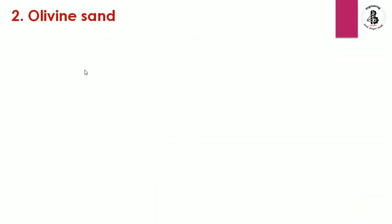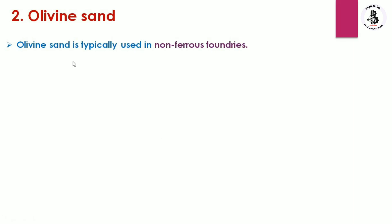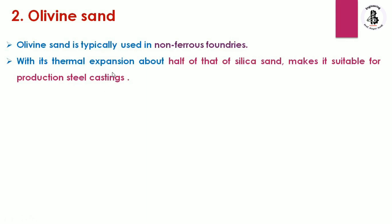Olivine sand is typically used in non-ferrous foundries. Its thermal expansion is about half that of silica sand, making it suitable for producing steel castings. However, the higher cost of this sand restricts its use in foundries, because using olivine sand increases the total cost of the cast product.